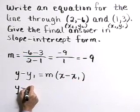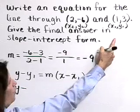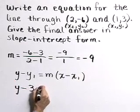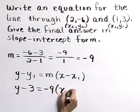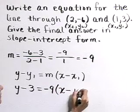So we have y minus y1, which is 3, equals the slope -9 times x minus x1, which is the number 1.